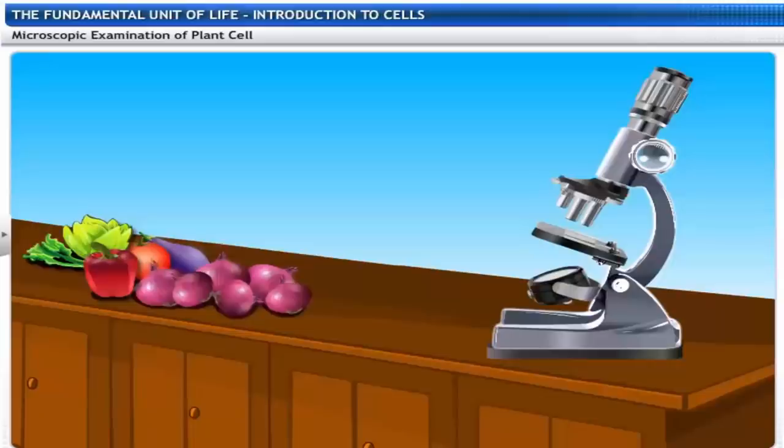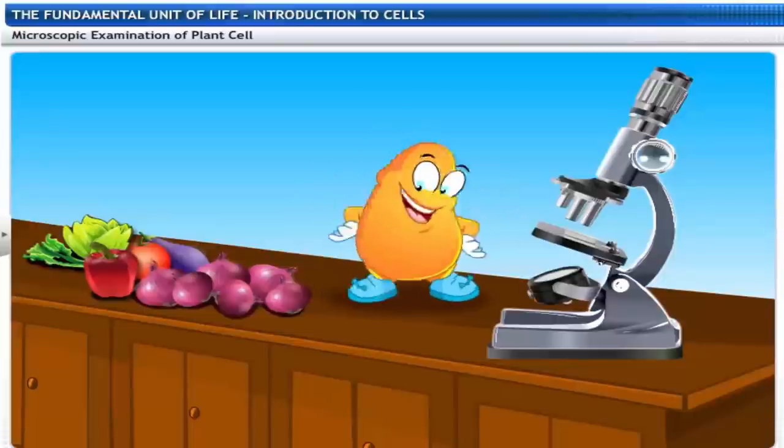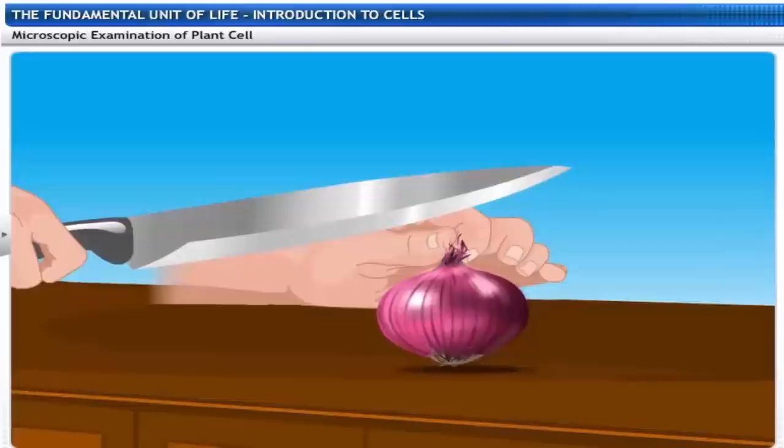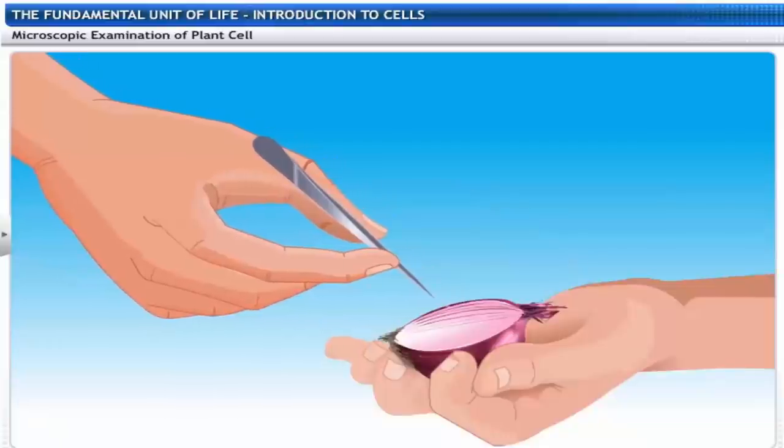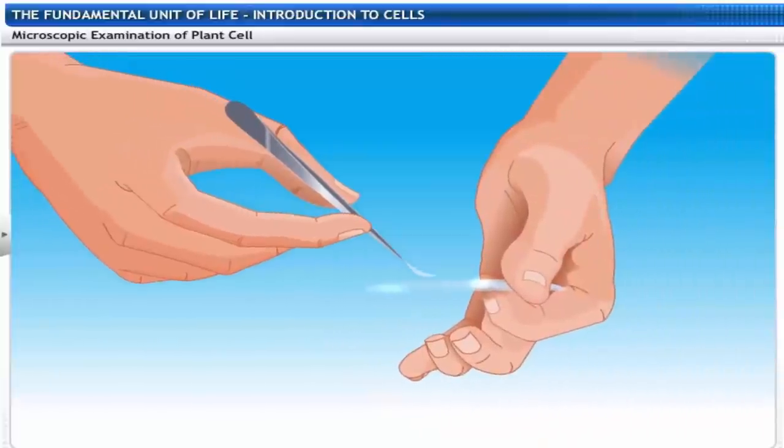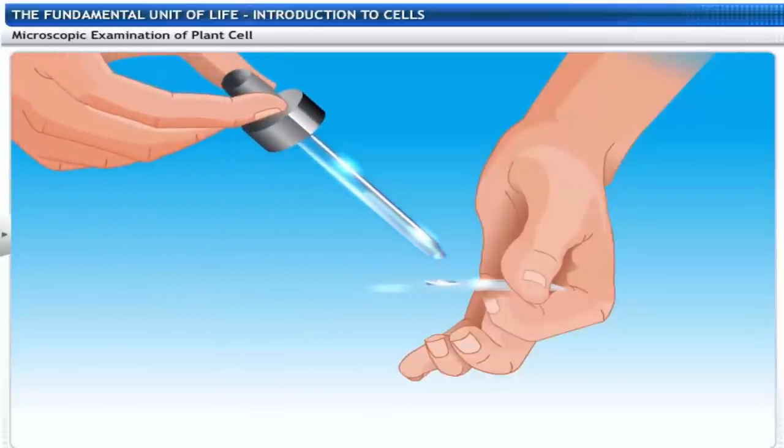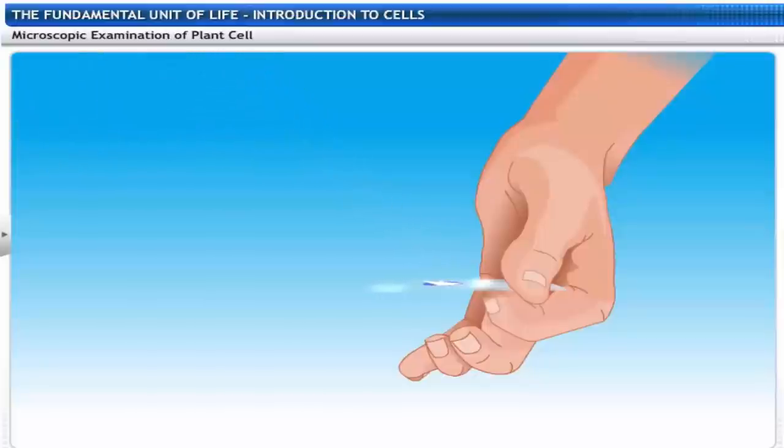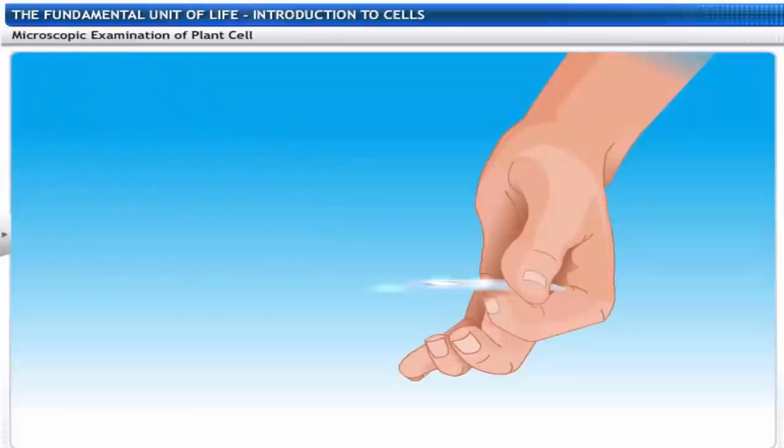Let's do a microscopic examination of a plant cell. Now, this is going to be fun! Here's an onion. We'll begin by cutting it into halves. Peel off the thin inner layer using forceps. Spread the thin peel on the glass slide. Put a drop of water on it. Add a drop of iodine solution to it. Place a cover slip on it. Tap gently with a needle on the cover slip to remove air bubbles.